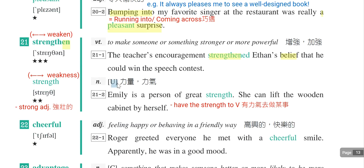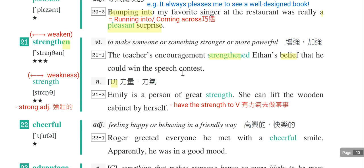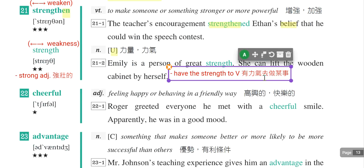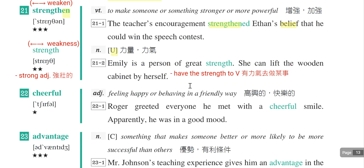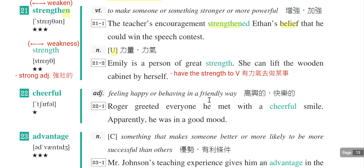去掉en变成名词strength，表示力气、力量，不可数。例句：Emily is a person of great strength。另外一个常用collocation是have the strength to do something，有力气去做某一件事情。例如：After the surgery, the patient doesn't have the strength to get out of the bed，就是手术之后没有力气下床。